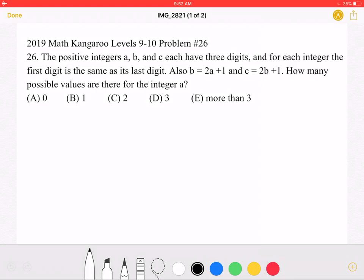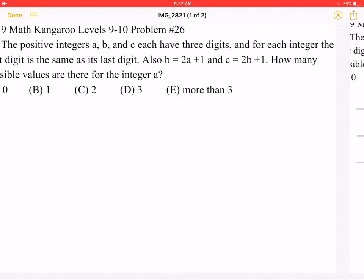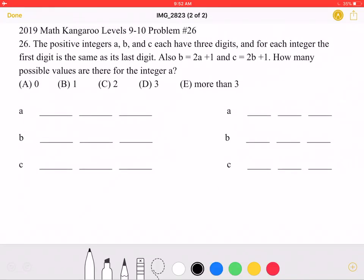This is the problem as it originally appeared on the test, and here is where we'll be doing the solution. To start, we know that for each integer, the first digit is the same as its last digit. So, for A, if we say the last digit is X, then the first digit must also be X.